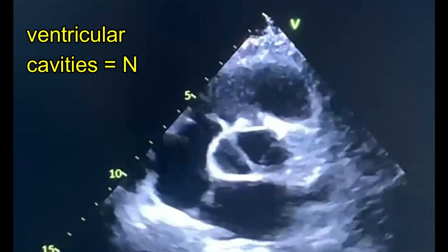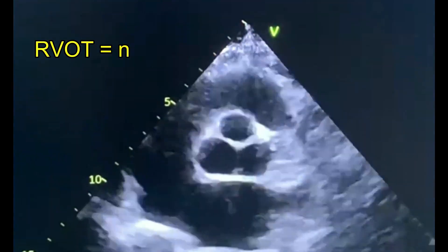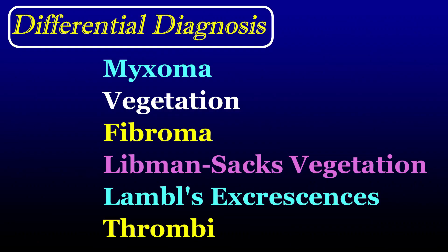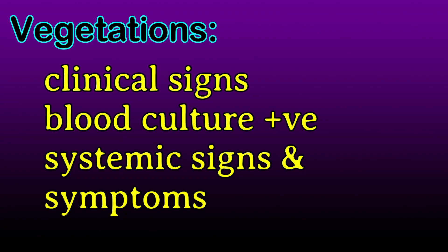Apart from myxoma, which very commonly arises from the intra-atrial septum and can arise from any aspect of the atria, both atria were normal. We also had to think about vegetation. Blood culture was negative in this patient, and the mitral valve was normal, so it is quite rare under Indian scenarios to have right-sided endocarditis.